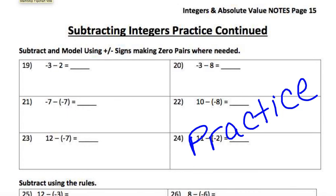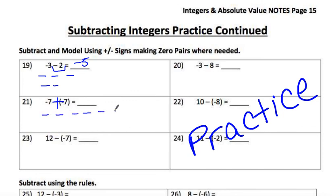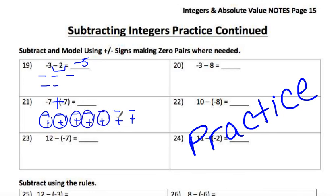The last page is modeling practice. For the first one: 3 negatives plus 2 negatives — same sign, just add them together for 5 negatives. Careful with number 21: minus-minus turns into a plus, so you have 7 negatives and 7 positives — they all cancel because they all match up, so the answer is zero.